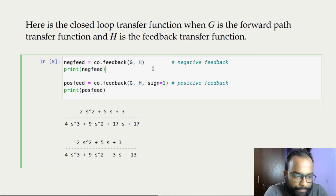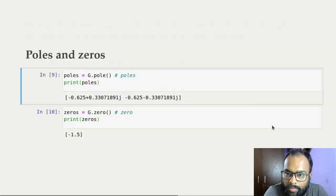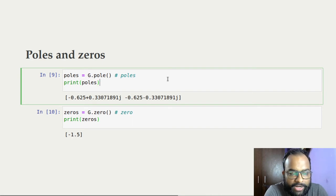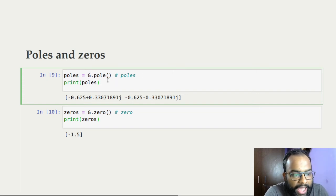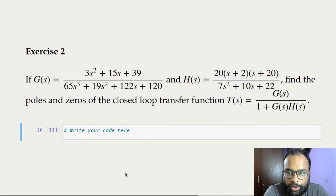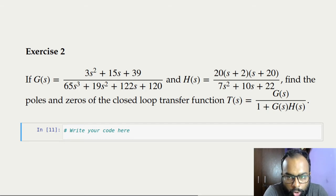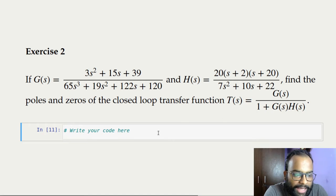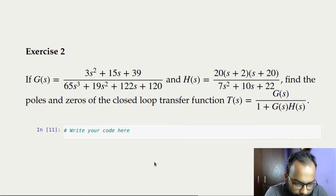If you have a transfer function object, you can call the pole method and the zero method to calculate the locations of poles and zeros. Here, G is a transfer function object defined earlier — calling the pole method returns the pole locations. Here's an exercise: given transfer functions G and H, calculate the closed-loop pole and zero locations by first defining the closed-loop transfer function, then calling the pole and zero methods.